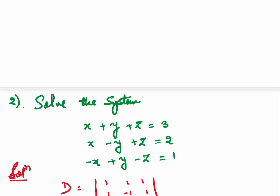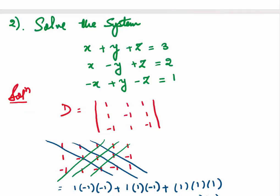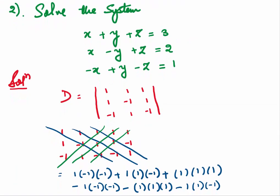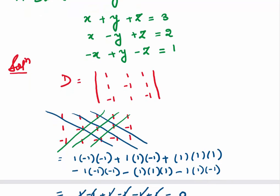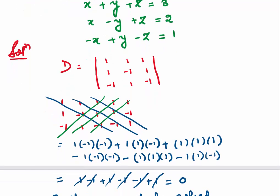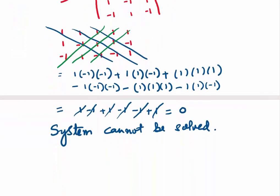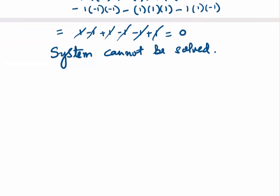Come to the second example. The system is x plus y plus z equals 3, x minus y plus z equals 2, and minus x plus y minus z equals 1. We have 3 equations and 3 variables. We first check whether the determinant is non-zero. Using Sarrus' method, the determinant value comes out to be 0, so this system cannot be solved using Cramer's Rule. At the end I'll tell you what the disadvantages of Cramer's Rule are.